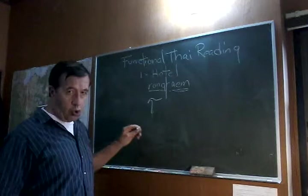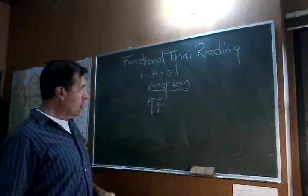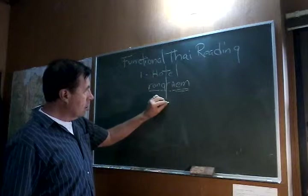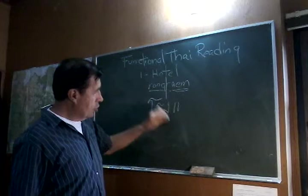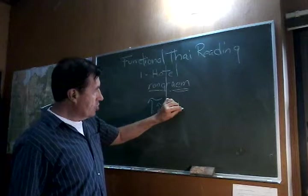Next to that you have a consonant, R-O-N-G-R-A, R-O, now it's R-O, and then R-O-N-G-R-A-M. And rø again, and mø ma.